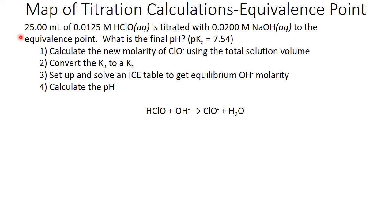First, we're going to calculate the new molarity of ClO- using the total solution volume. We're then going to convert that Ka to a Kb. We will then set up and solve an ice table to get the equilibrium hydroxide molarity. And then from that, we will calculate the pH.